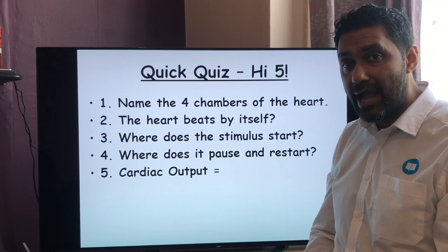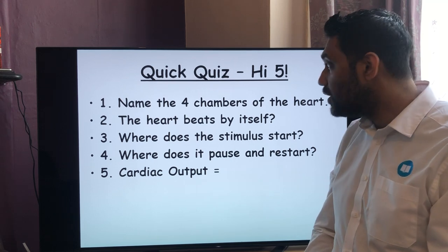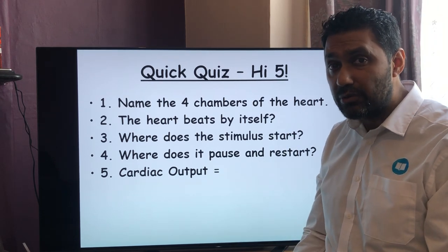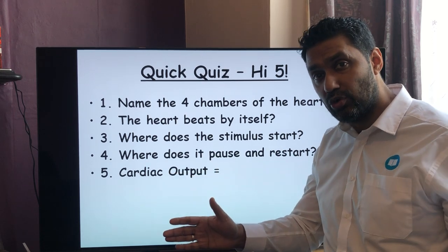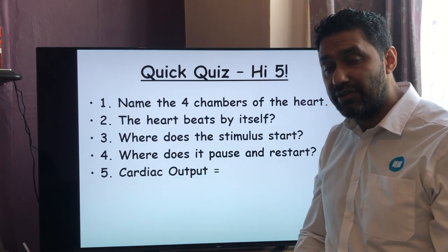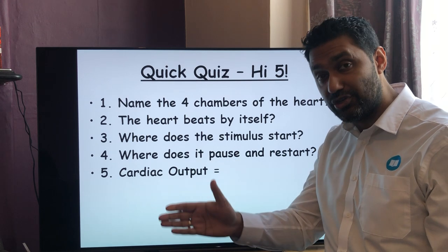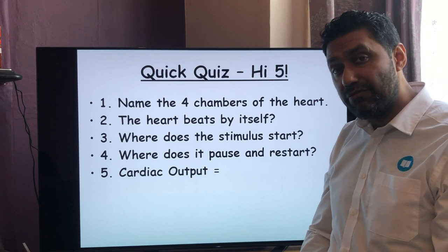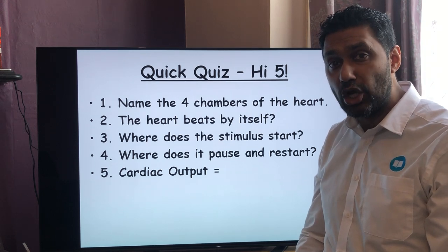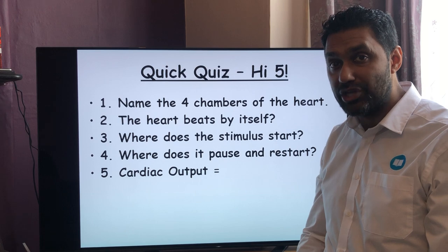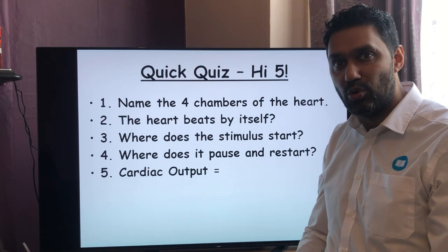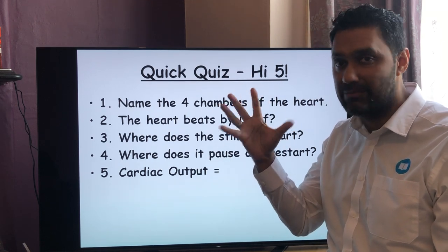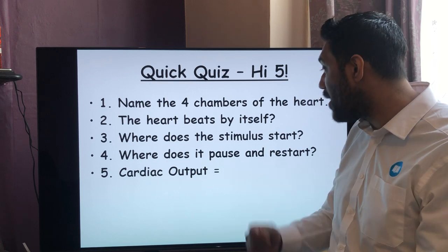The four chambers of the heart: the top two chambers are called atria — you've got your right atrium and your left atrium. The bottom two chambers are called ventricles — your right ventricle and your left ventricle. The heart beats by itself — the word for that is myogenic. If you literally took the heart out of somebody it would carry on beating in your hands, because the heart is myogenic — it does beat by itself.